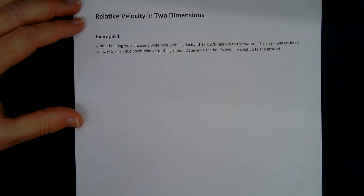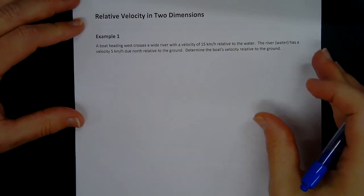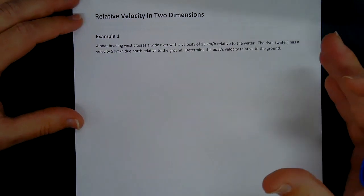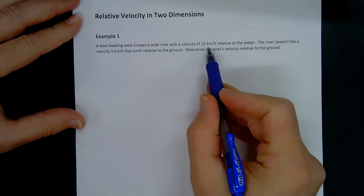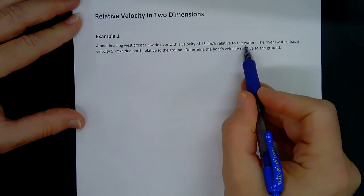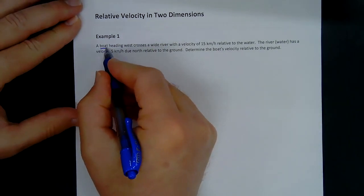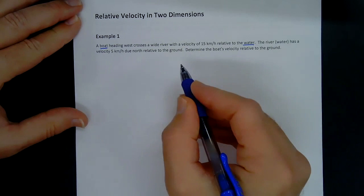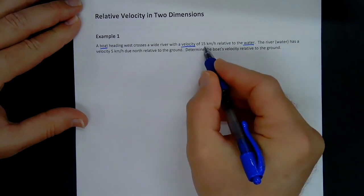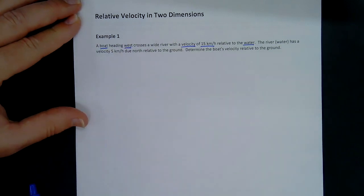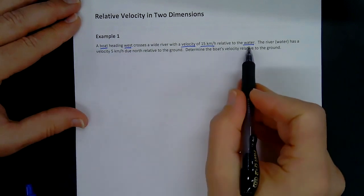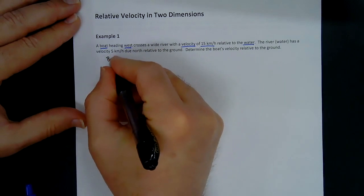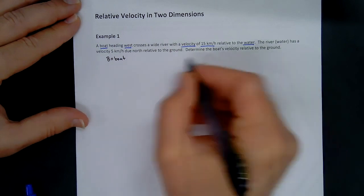Today we're going to put everything together from what we've been going over for the last four lessons. It's just applying what we've learned and pulling the vectors out of the text. A boat heading west crosses a river with a velocity of 15 kilometers per hour relative to the water. We have two objects: the boat and the water. We'll use subscripts — B for boat and W for water.